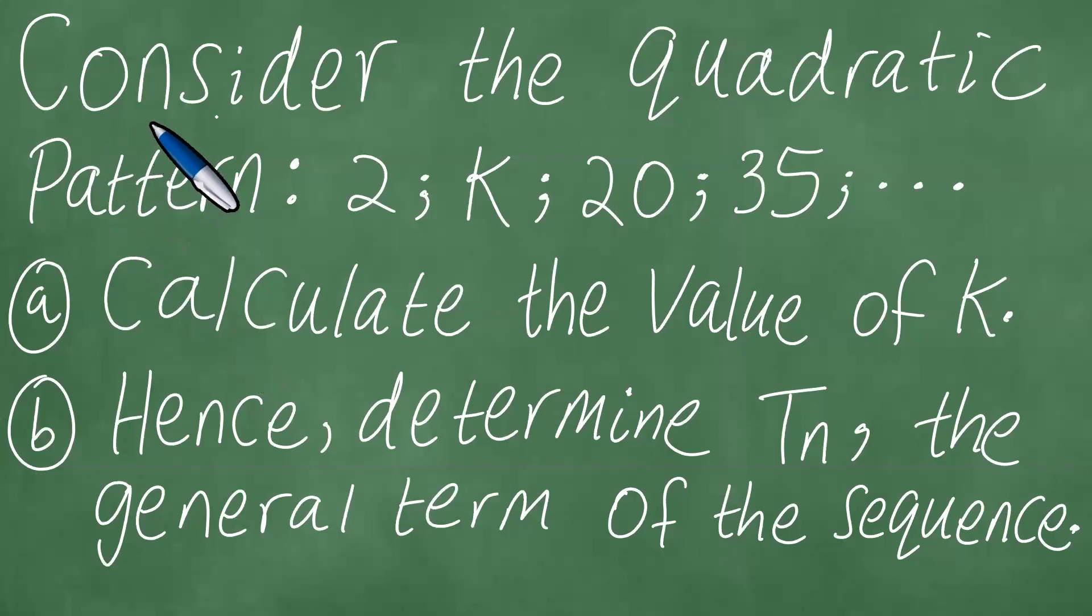We need to consider the quadratic pattern with the terms 2, k, 20, 35, and so on. We shall proceed to calculate the value of k in part a, and hence determine Tn, the general term of the sequence. We proceed to solve this problem in a step-by-step manner.